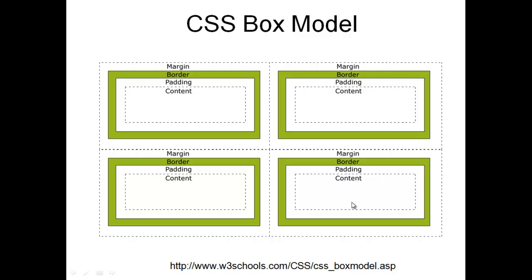When you put it together it could look something like this. Here we have four pictures. We have padding around each picture, a border around each picture, and margins around each picture. Using some imaginary numbers: a 10-pixel margin, 2-pixel border, and 10 pixels of padding. To figure out the width: 10 plus 2 is 12, plus 10 is 22.